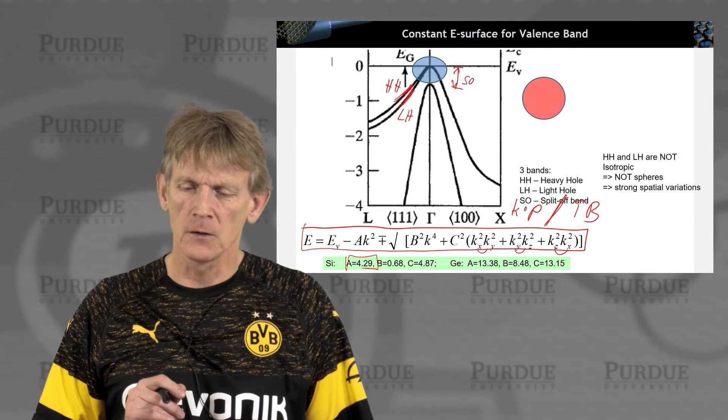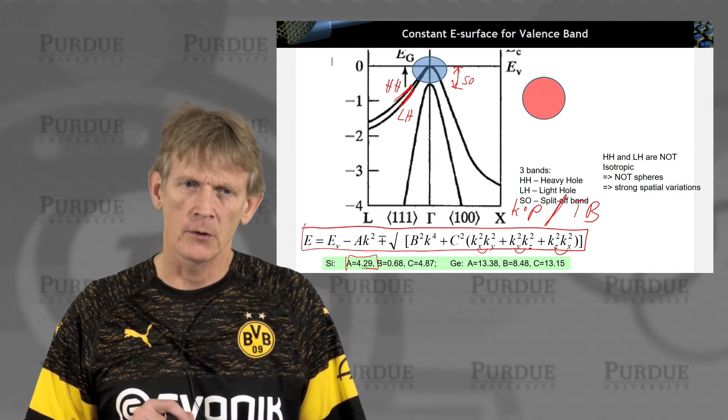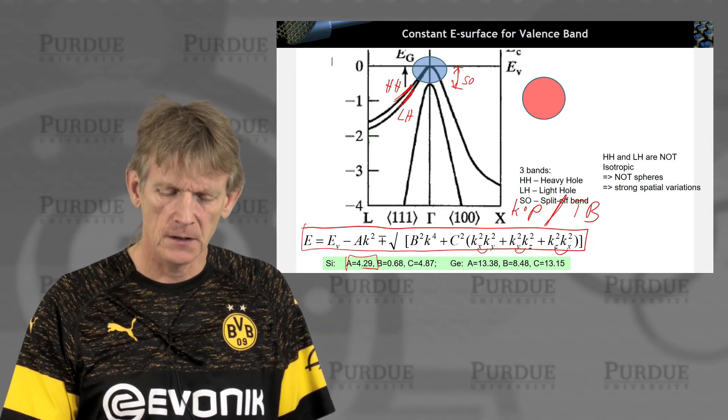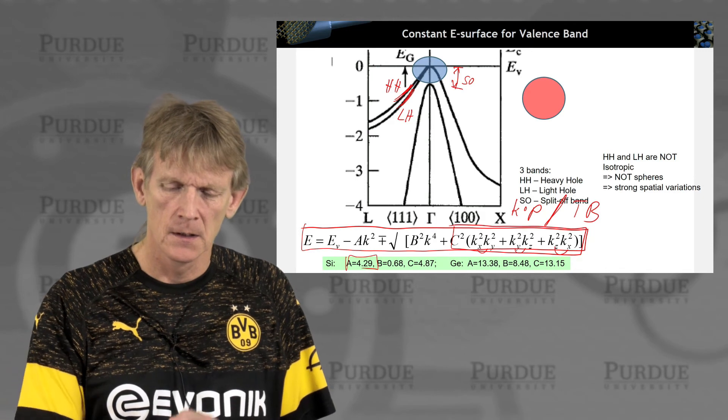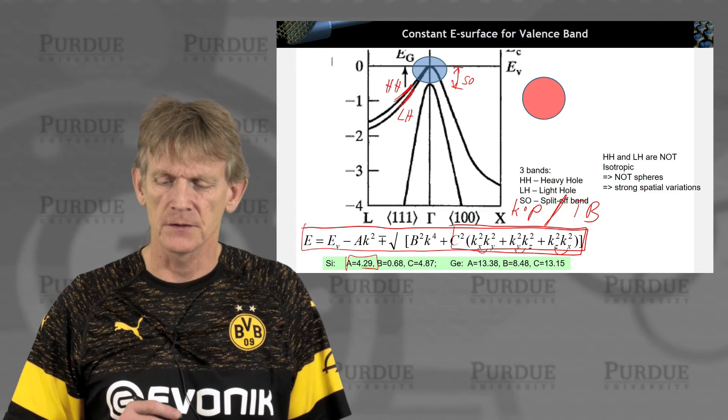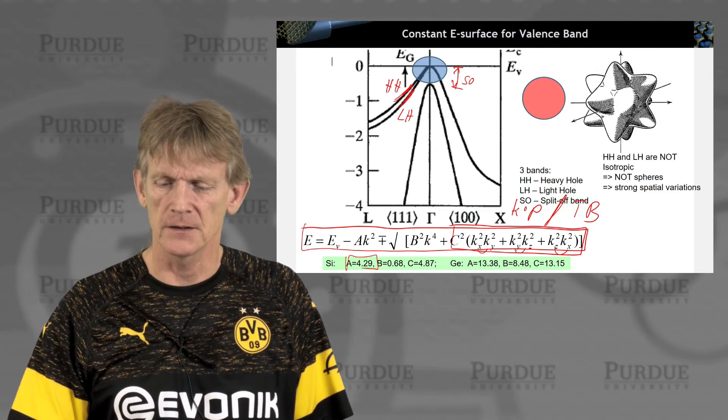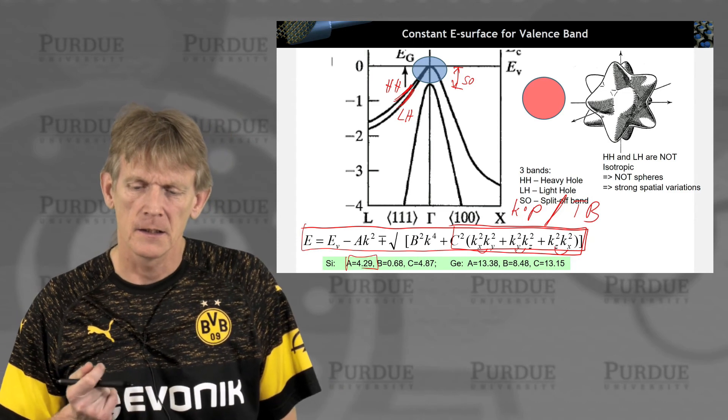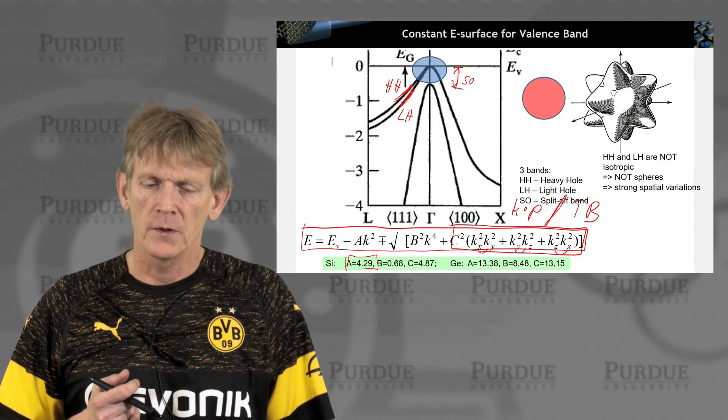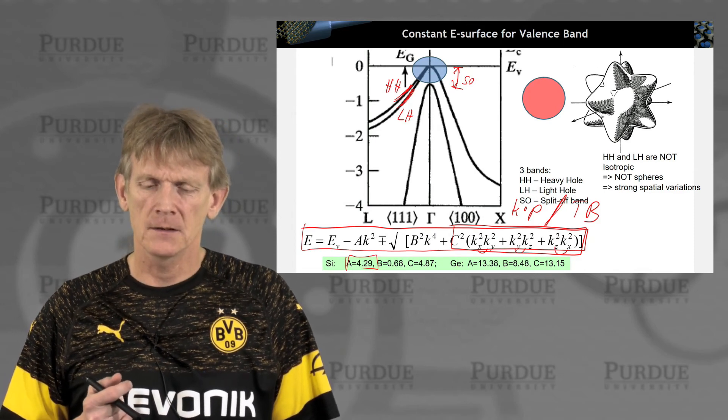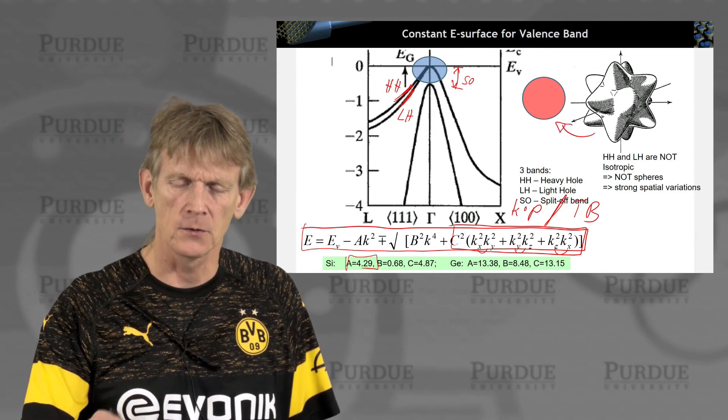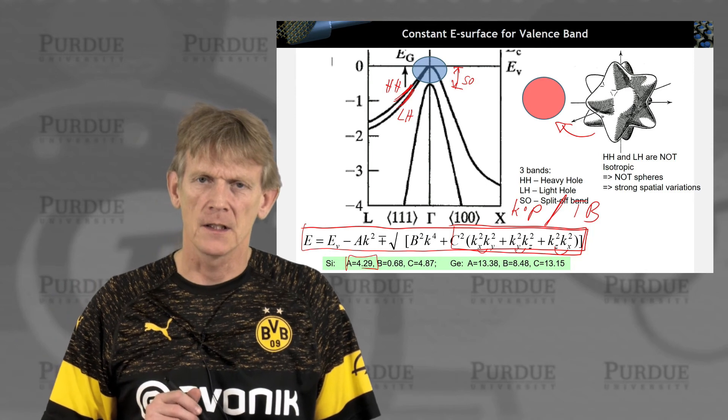Now, in an ideal world, you would like those bands to be perfectly spherical. But, with these couplings here, the light hole and heavy hole are not isotropic. They are not spheres, and they're strong spatial variations. In fact, the isosurface of a heavy or light hole might look more like this. So, you might say, oh, that looks disastrous. And we'll show you methodologies later to approximate this thing into a sphere and just deal with it as a sphere.